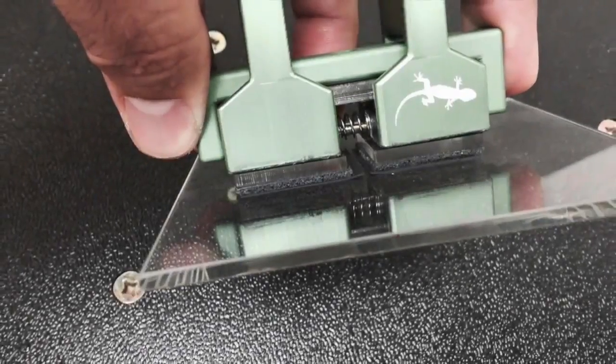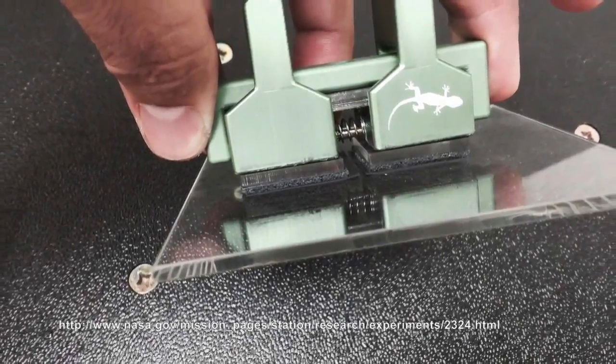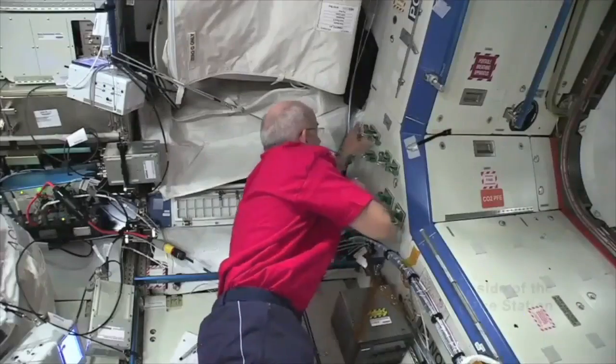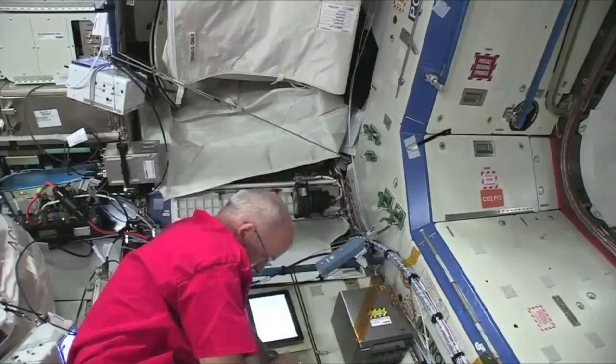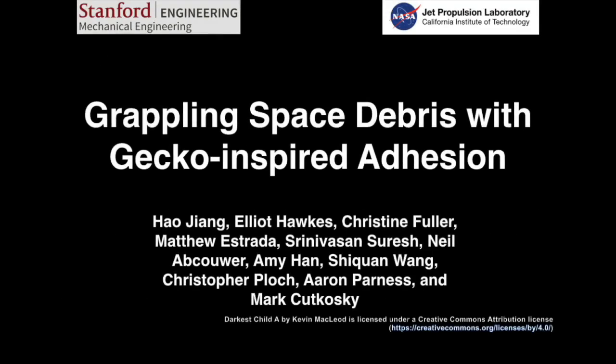In 2016, NASA sent several smaller versions of the gripper to the International Space Station for testing. We really look forward to bringing this technology to life and making more debris-free orbits in space.